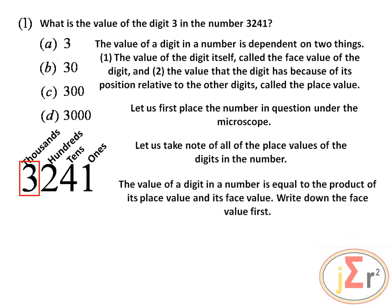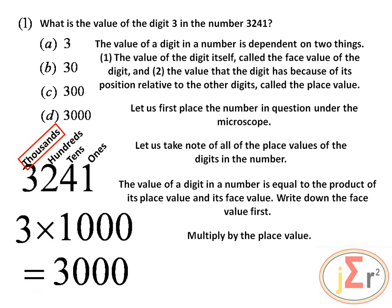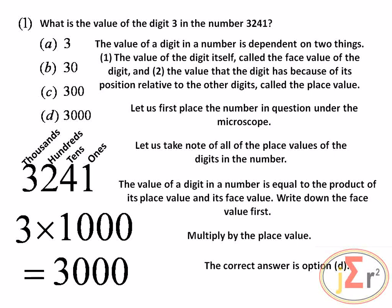The value of a digit in a number is equal to the product of its place value and its face value. The face value is 3, and the place value is thousands, so we multiply 3 by 1000. That gives us 3000, which is the value of the digit 3 in the number. The correct answer is option D.